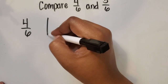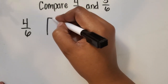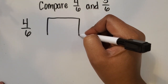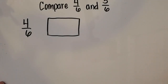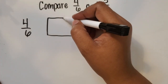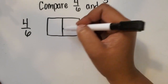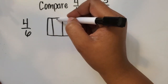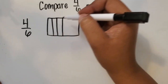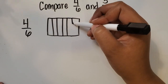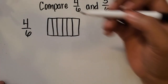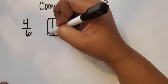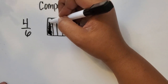So when we draw our wholes, we can partition both wholes into 6 equal parts. I'm going to take this first rectangle and partition it in half and then partition each half into thirds. I'm going to shade in 4 of those 6 equal parts.